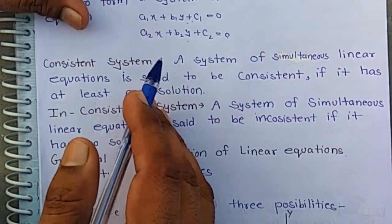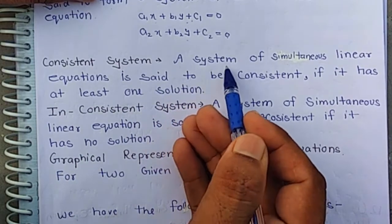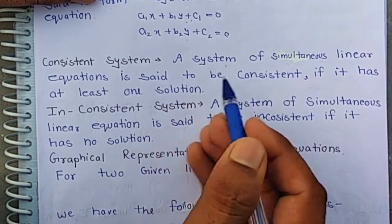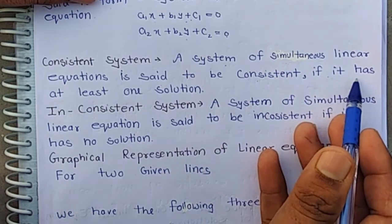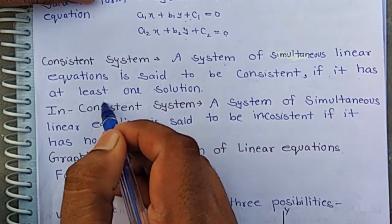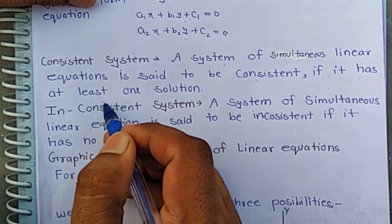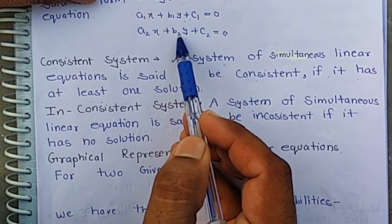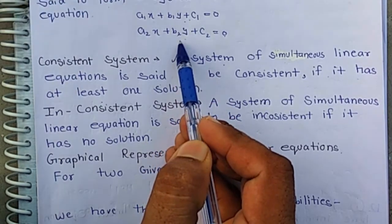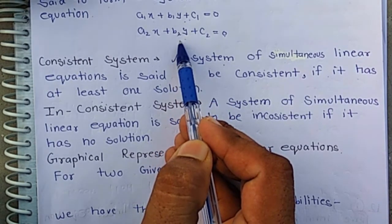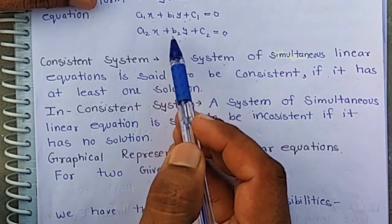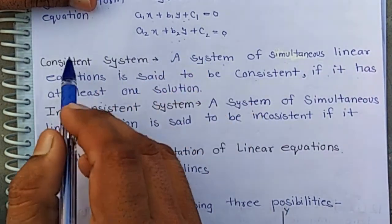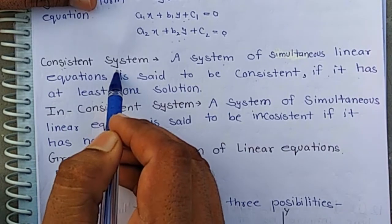What is a consistent system? A system of simultaneous linear equations is said to be consistent if it has at least one solution. That means if these two equations have at least one solution, then these equations form a consistent system.